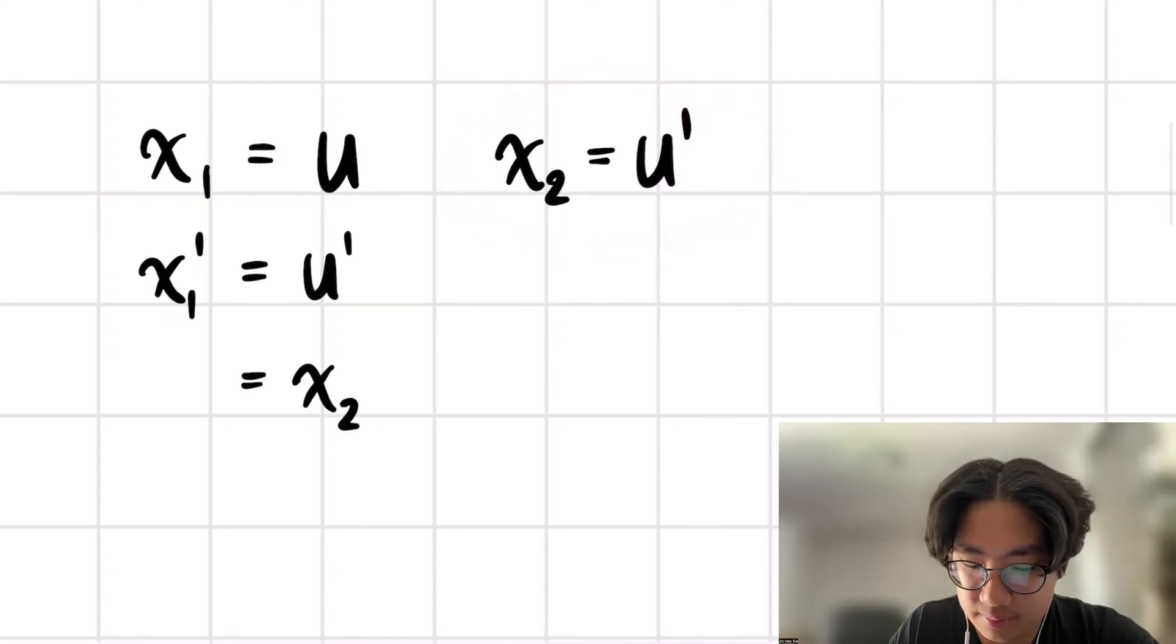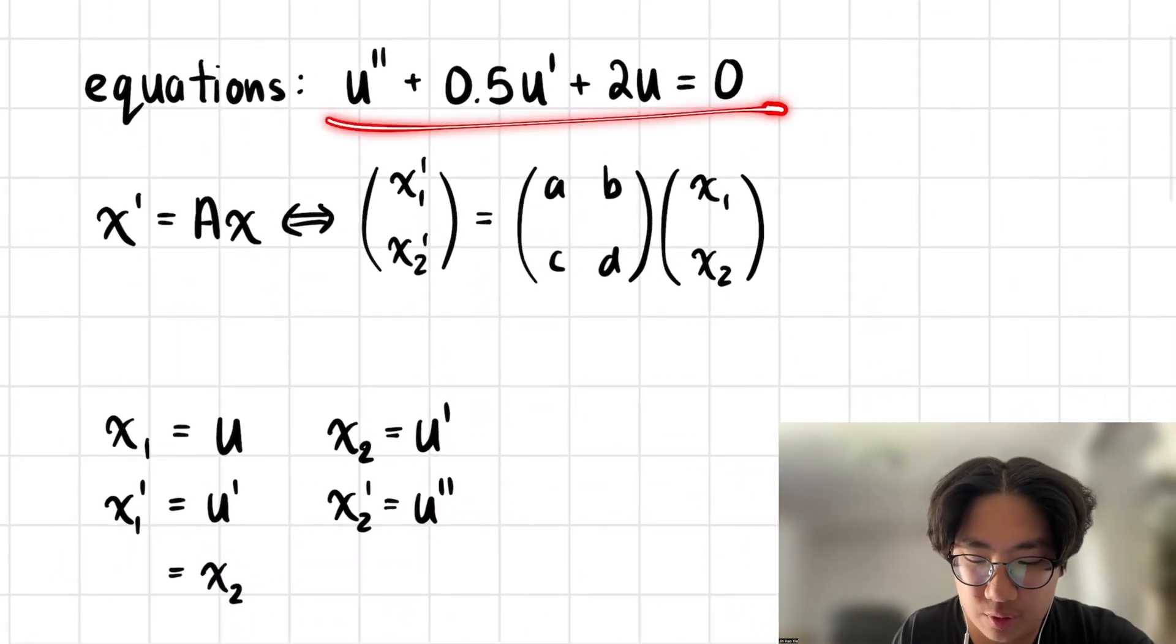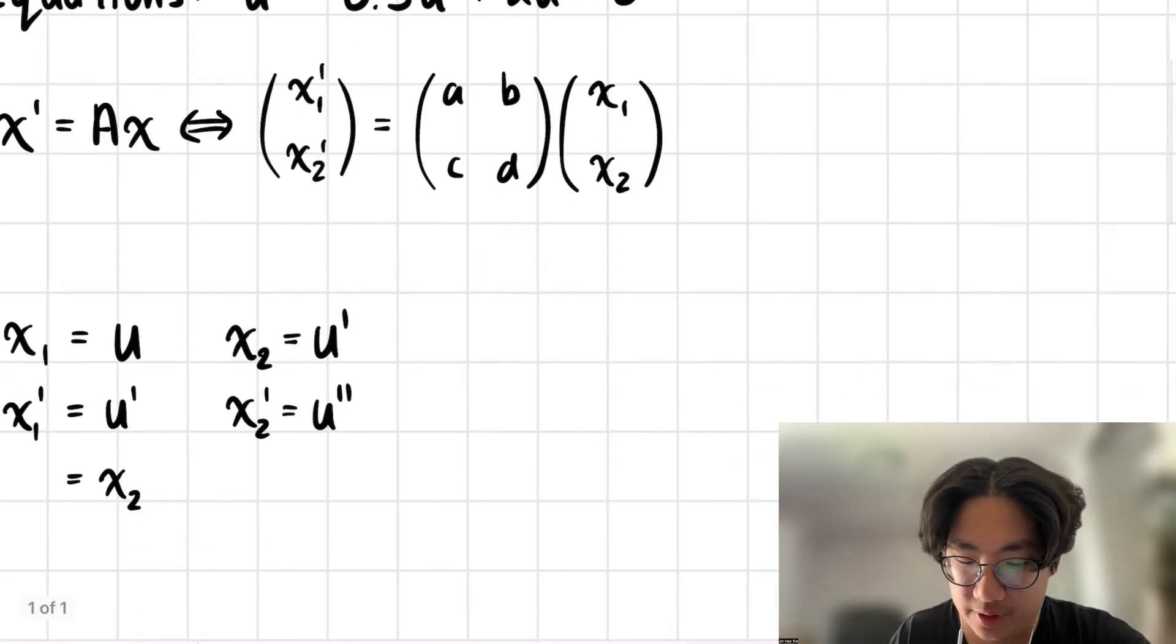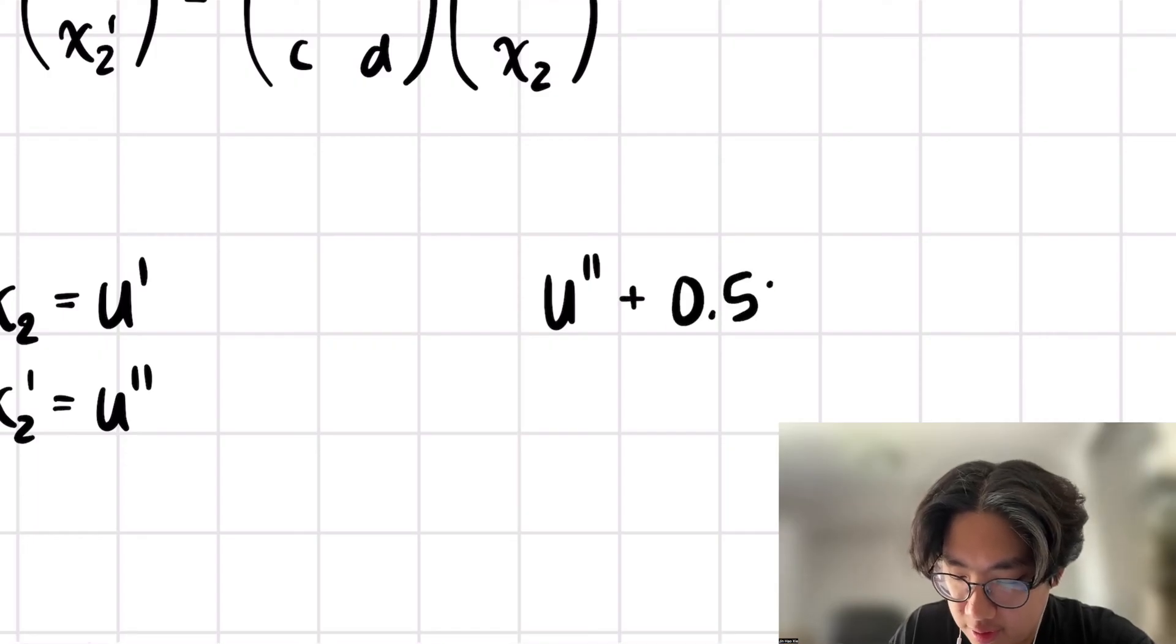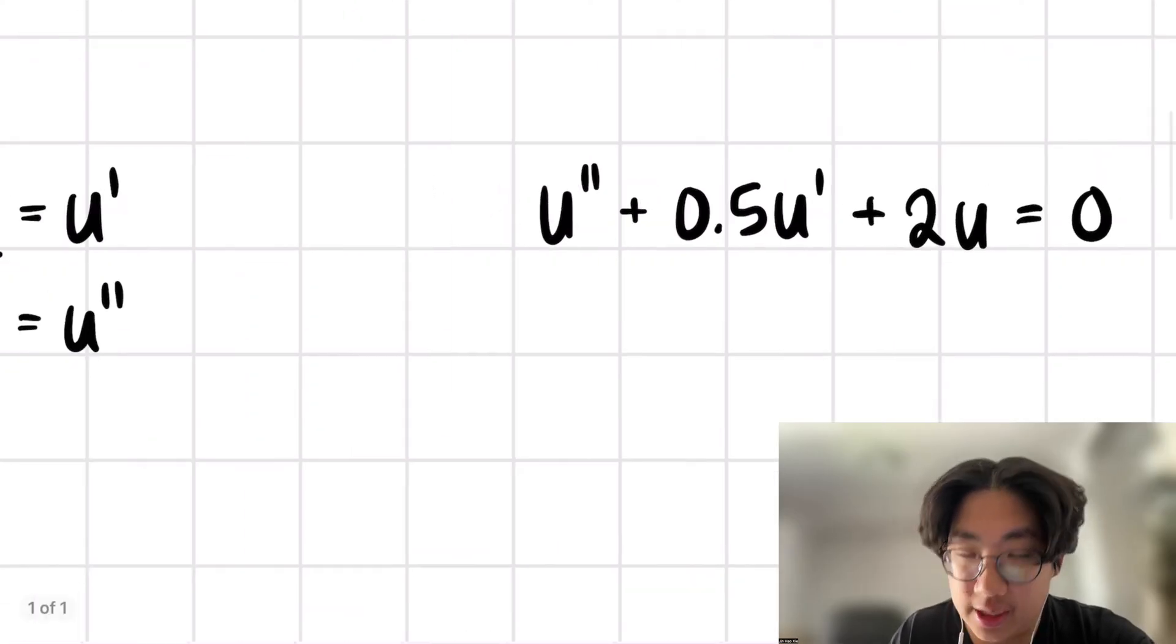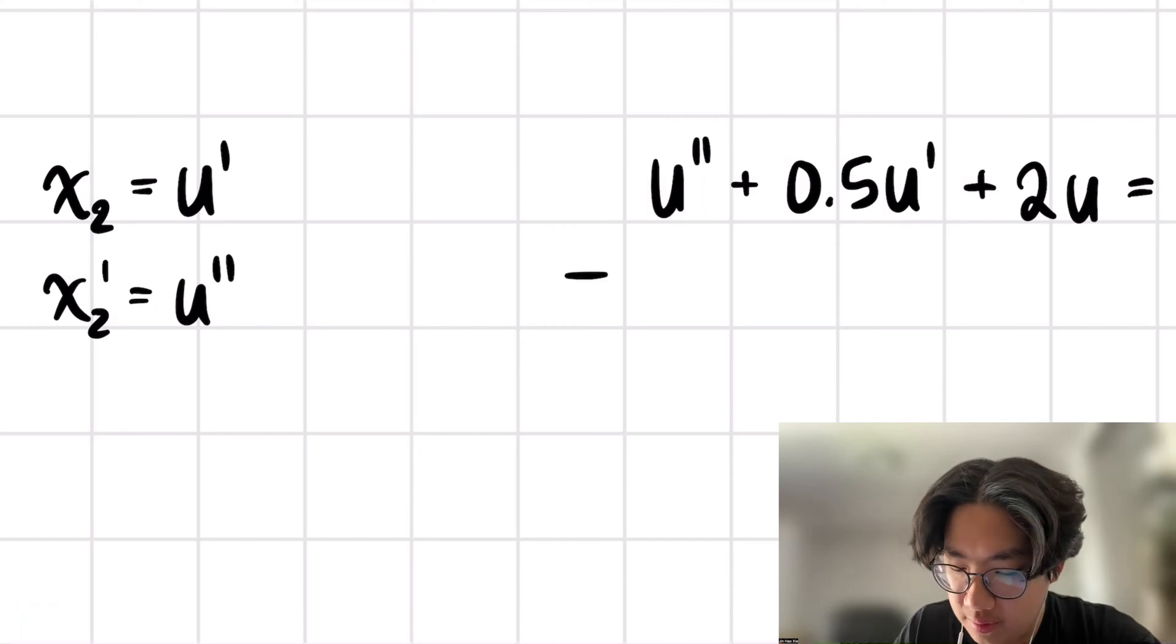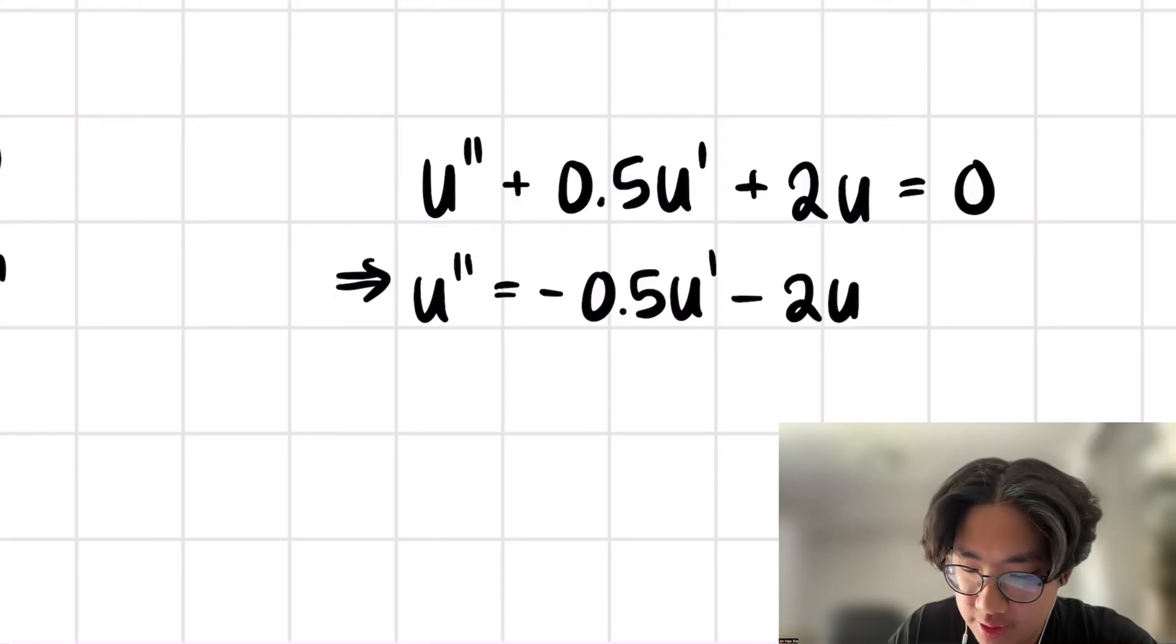Second, we can then do the same thing. We have x2 prime is equal to u double prime. But if we look over here, we have an equation for this, and we're able to isolate for u double prime. So u double prime plus 0.5 u prime plus 2u is equal to 0. We're going to isolate for u double prime. So u double prime equals negative 0.5 u prime minus 2u, just moving these two terms over to the right side of the equation.